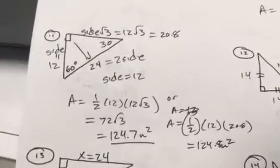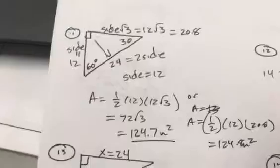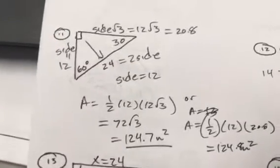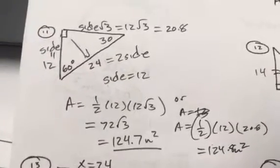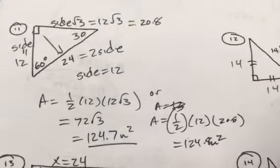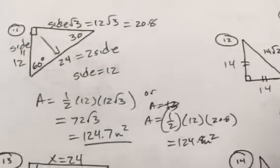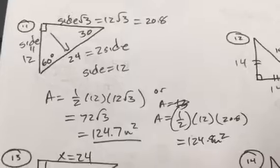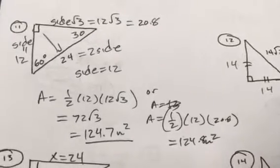30-60-90 triangle. Okay, that's the quickest way to do 11. You could put an x and a y in there, do some trig, whatever you want. However you write your answer, those are two different ones you get, either if you use 12√3 or if you immediately call it 20.8.